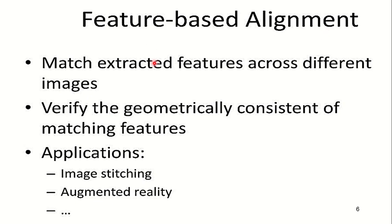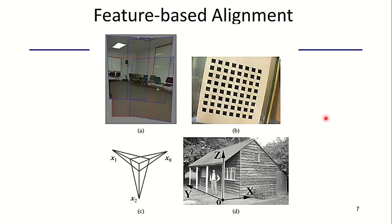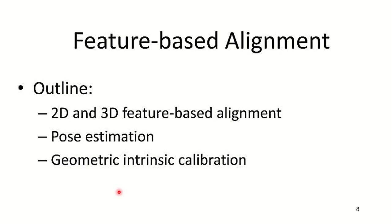In feature based alignment, we match many extracted features across different images. We verify the geometrical consistency of matching features. The applications of feature based alignment are image stitching and augmented reality. In feature based alignment, we take an image, partition it into number of images, and start to match and calibrate images in the image coordinates. These are the images of the vanishing points which we use for conversion of 2D data to 3D data.